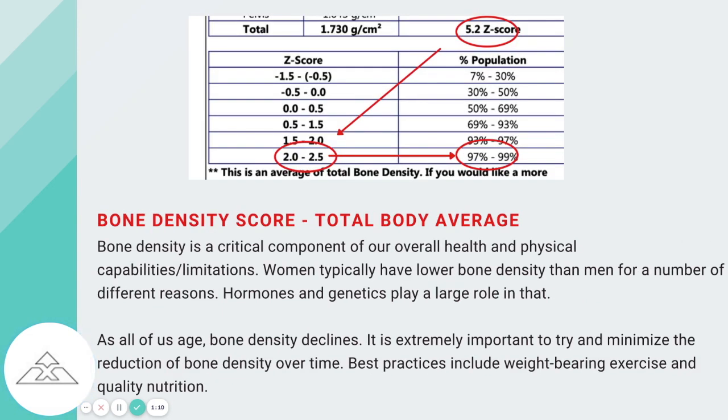The Z score again is not a comparison — it's just where you're currently at. This person is at 5.2, far off in the 99th percentile.